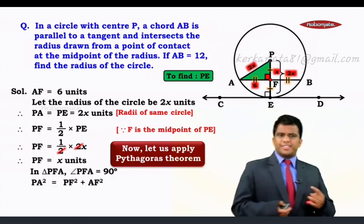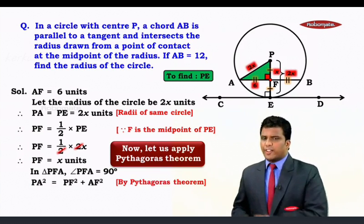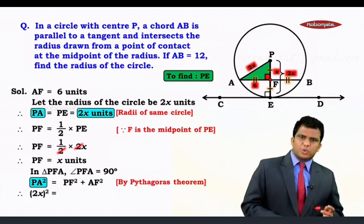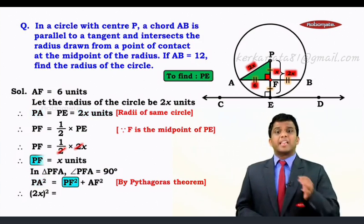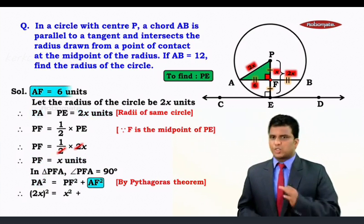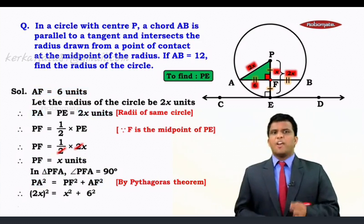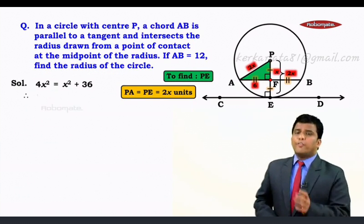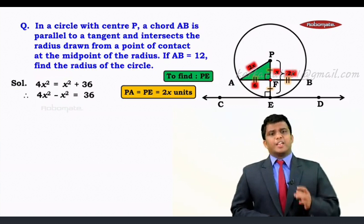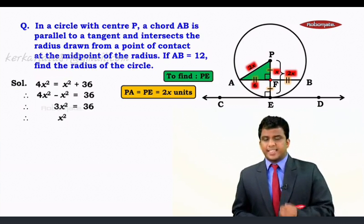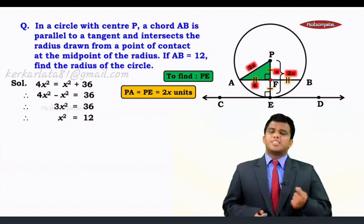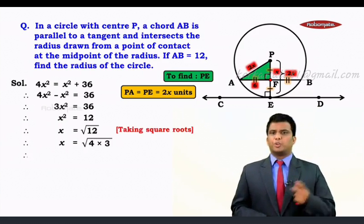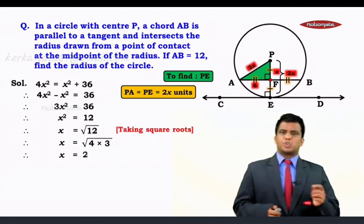So we now say PA square is equals to PF square plus AF square by the Pythagoras theorem. So now we substitute the values. That is 2x the whole square is equals to x square plus 6 square. So we now have 4x² = x² + 36. Let's bring the like terms together. 4x² - x² = 36. That means 3x² = 36. So x² = 12. So x becomes √12 and x will be √(4×3). So x becomes 2√3.